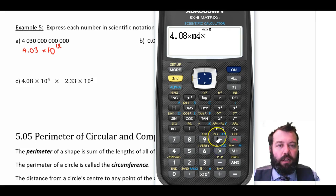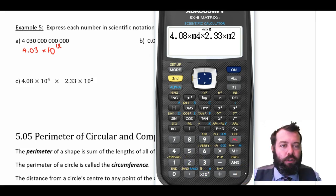Now, I can just go times 2.33 times 10 to the power of 2. Now, I'm guessing here we should get something like 8 point something times 10 to the power of, I'm hoping, 6. So I get that answer there.